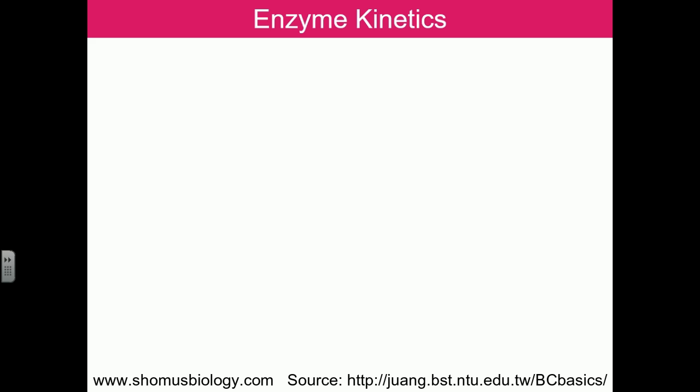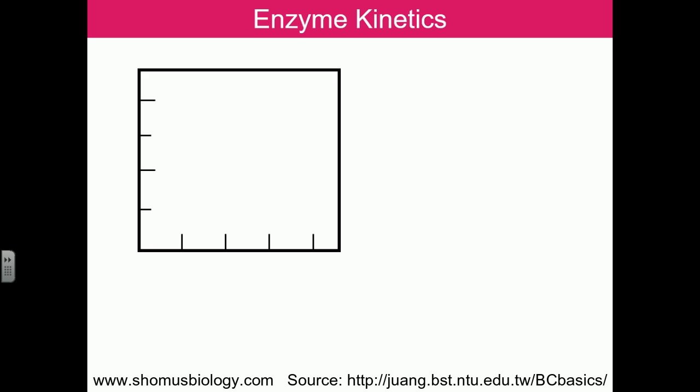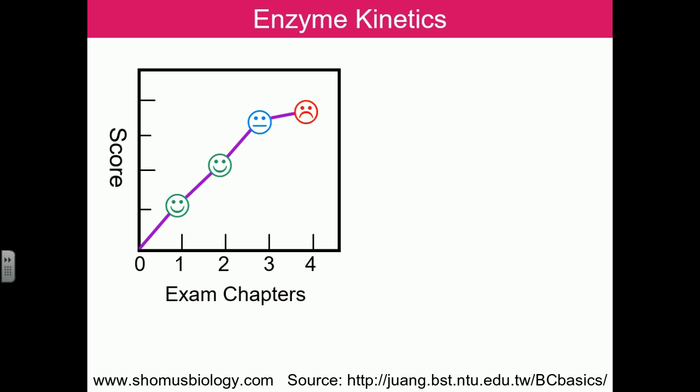In this analogy, students are like enzymes trying to get good marks in the exam. We can look at reading performance using a graph where the x-axis shows the number of exam chapters a student covers and the y-axis shows the score they got. This is the graph for student A.